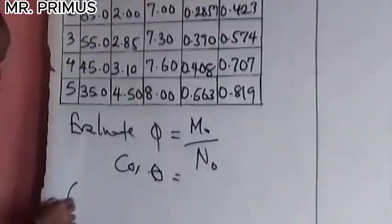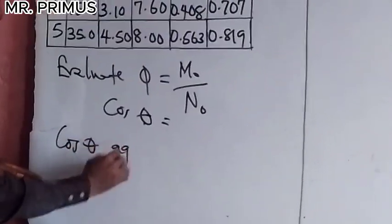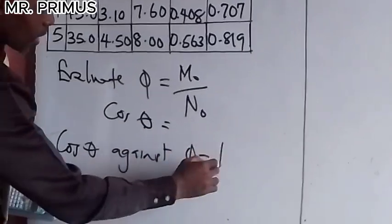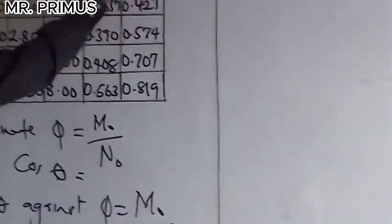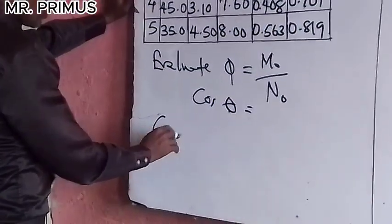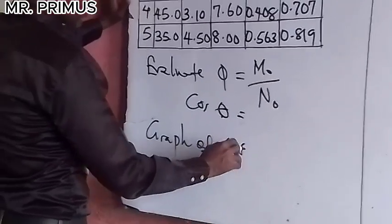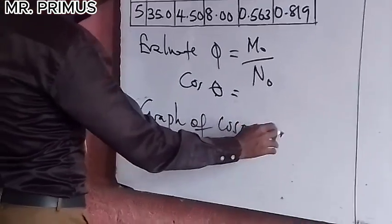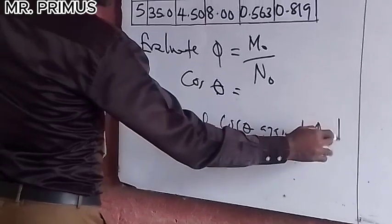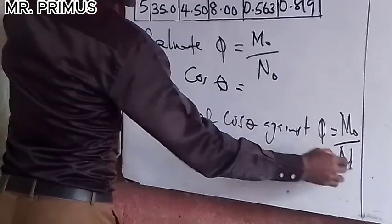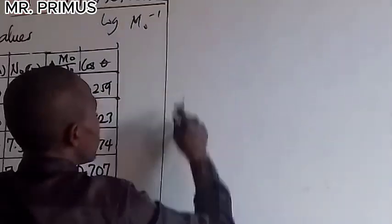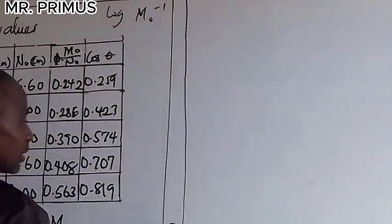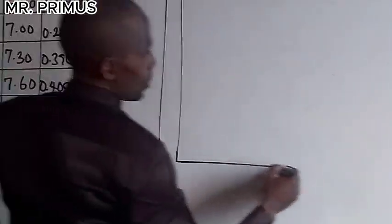Now we are going to plot the graph of cos theta against Mo over No. So we are going to plot this against this. Alright, so let's plot the graph of cos theta against Mo over No. So do you like this? Look it long, you know, like this. Okay, you draw it.